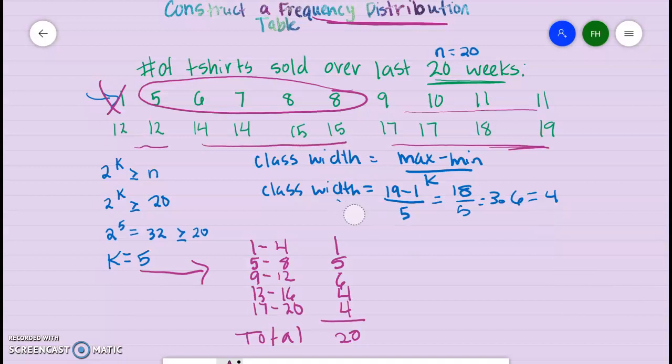If you wanted your relative frequency, you would do 1 divided by 20, which is the total. 5 divided by 20, 6 divided by 20, 4 divided by 20, and then 4 divided by 20. This would be 0.05, this would be 0.25, and this would be 0.30. And then these would be 0.20 and 0.20.